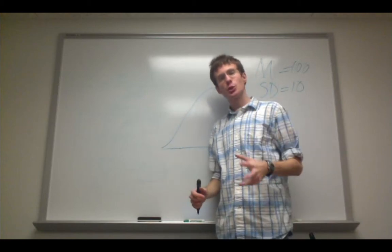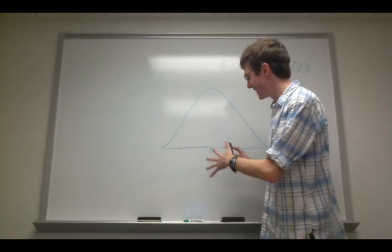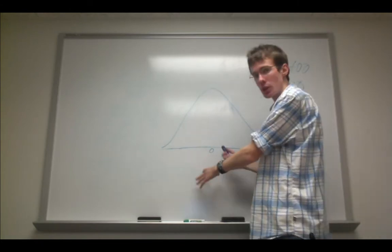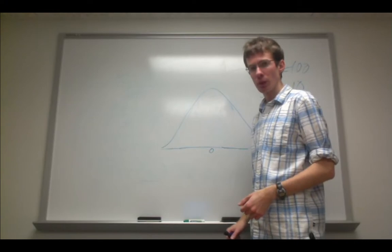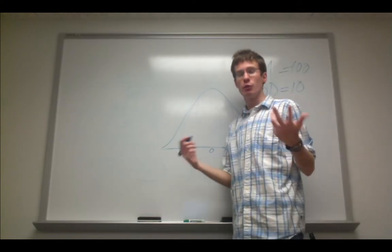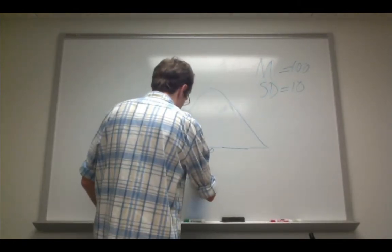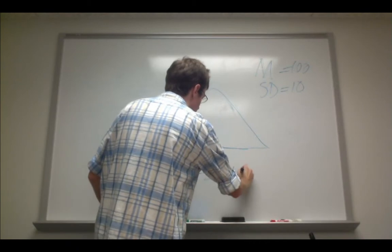As we've seen, different z-scores are associated with different amounts under this curve between, say, the mean of the distribution and a particular z-score. One useful heuristic to use is something called the 50-34-14 rule.